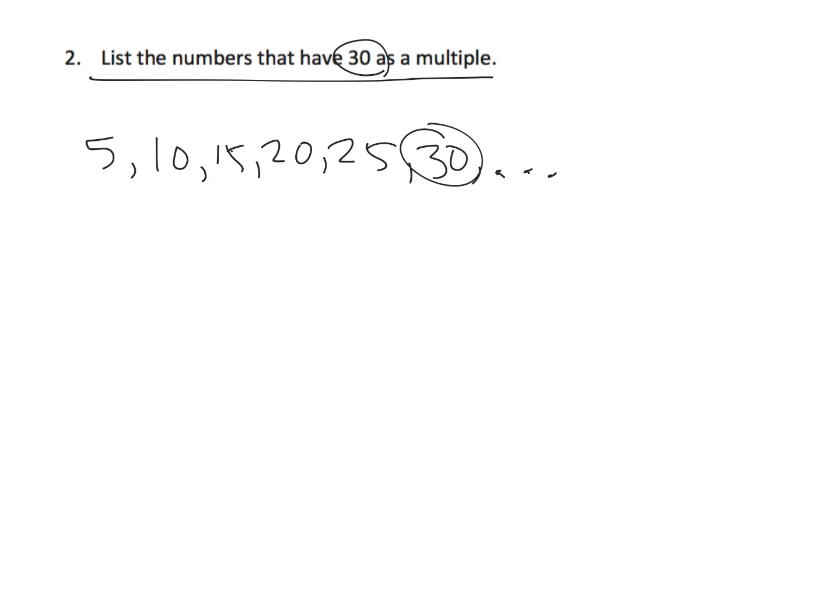And then, of course, if 5 works, that means 6 works, because 6 times 5 is 30. So that'd be 6, 12, 18, 24, 30, dot, dot, dot. So that works.